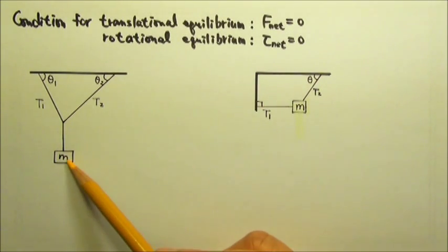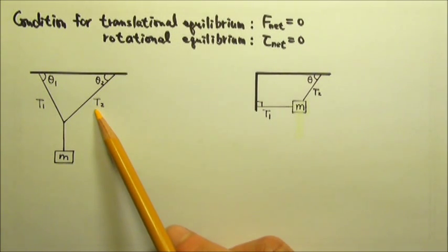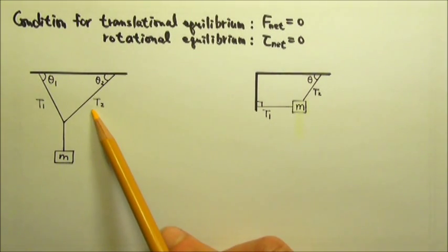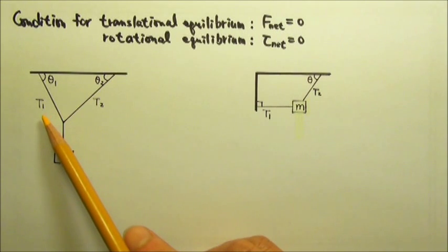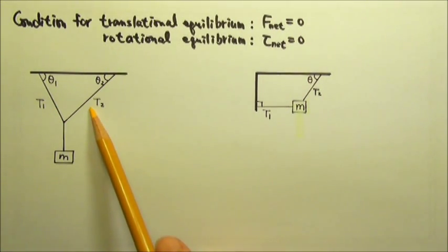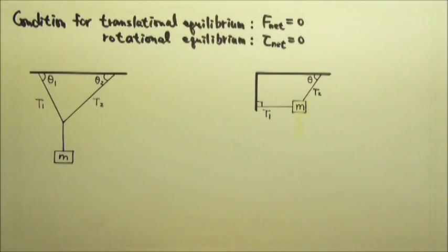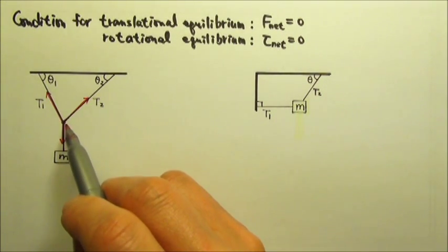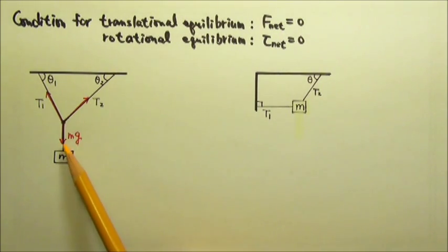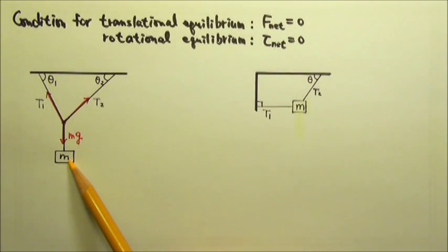In order to relate this mg to these two tensions, we will have to draw a force diagram that involves these two, which means we have to draw the force diagram for an object that these two strings are touching. So we would draw the force diagram for this junction point. If the string has no mass, this junction point would have no mass, and we already know the tension in this string is the mg of this hanging box.